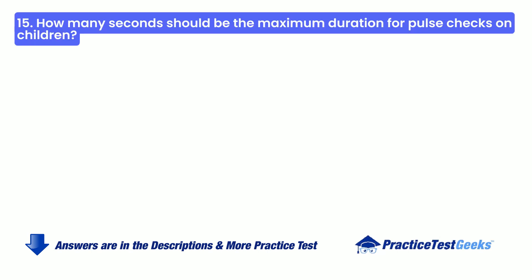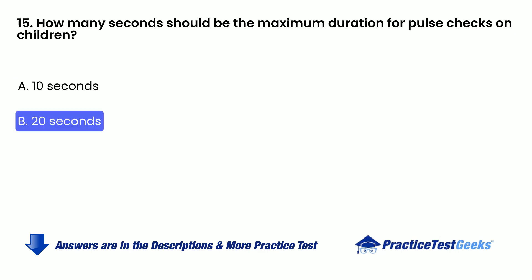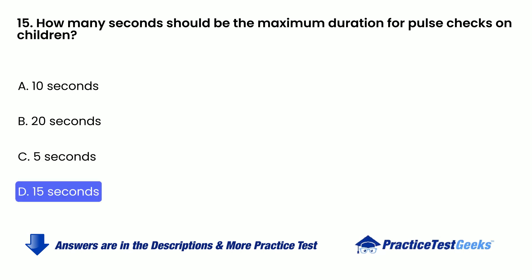How many seconds should be the maximum duration for pulse checks on children? A. 10 seconds. B. 20 seconds. C. 5 seconds. D. 15 seconds.